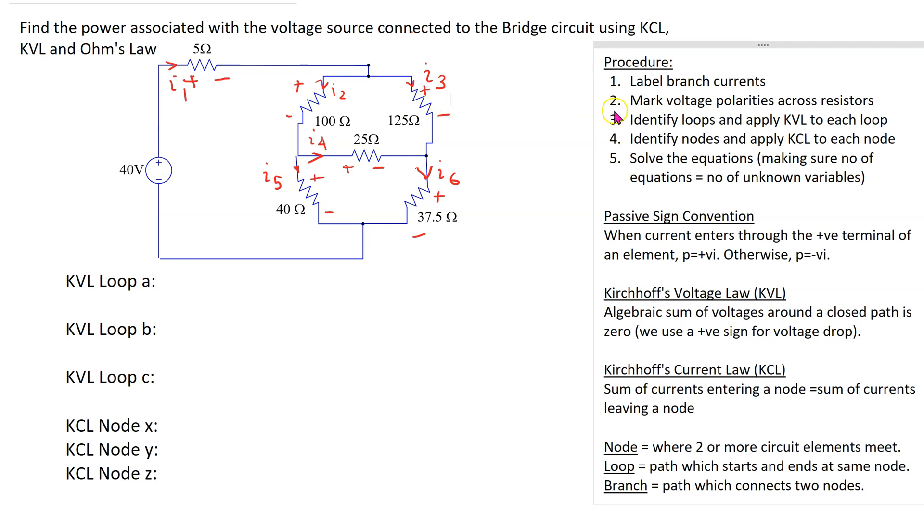Now we need to identify loops to apply Kirchhoff voltage law and nodes to apply Kirchhoff current law. In this problem setup, we have six unknown variables: I1, I2, I3, I4, I5, and I6. Thus we need six equations to solve for these values. Let's define loop A here.